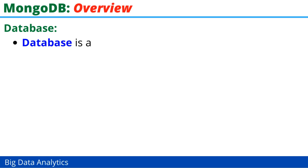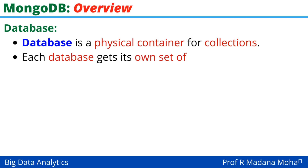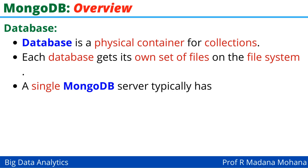Let us first look at the concept of a database. Other than NoSQL, we are familiar with RDBMS — Relational Database Management System. Normally, a database is a physical container for collections. Each database gets its own set of files on the file system. A single MongoDB server typically consists of multiple databases.